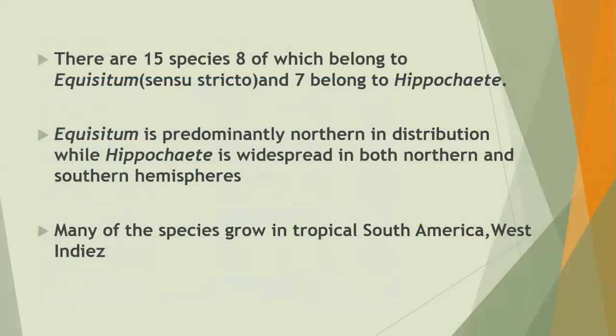There are more or less 50 species, eight of which belong to the genus Equisetum sensus strictum and seven belong to Hippochaete. Equisetum is predominantly Northern in distribution, while Hippochaete is widespread in both Northern and Southern Hemispheres. Many of the species grow in tropical South America and the West Indies.